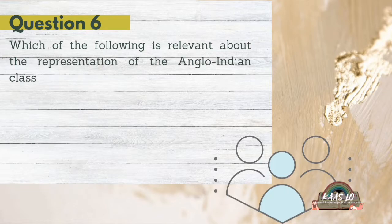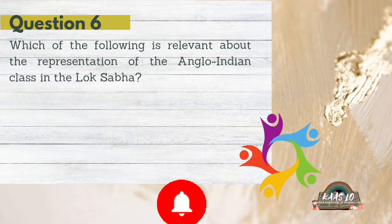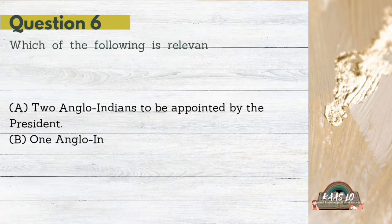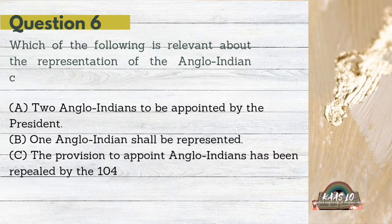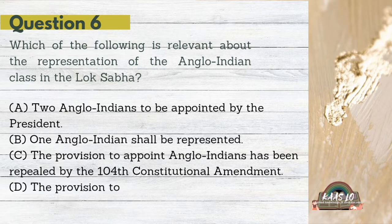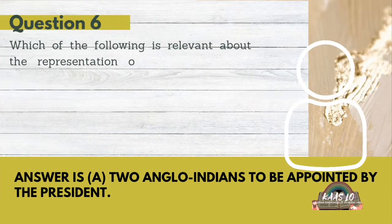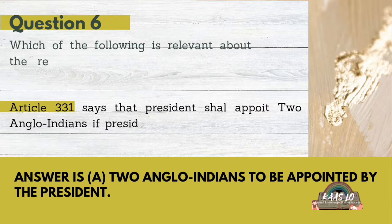Question 6 asks: Which of the following is relevant about the representation of the Anglo-Indian class in Lok Sabha? Options: A. Two Anglo-Indians to be appointed by the President, B. One Anglo-Indian shall be represented, C. The provision to appoint Anglo-Indians has been repealed by the 104th Constitutional Amendment, D. The provision to appoint Anglo-Indians has been repealed by Presidential Order. Article 331 of the Constitution says the President shall appoint two Anglo-Indians if the Anglo-Indian community is not adequately represented, and they are appointed by the President.